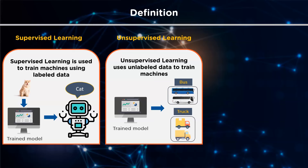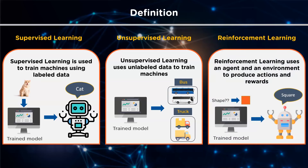Unsupervised learning uses unlabeled data to train machines. Unlabeled data means there is no fixed output variable — the model learns from the data, discovers patterns and features, and returns the output. Here is an example of an unsupervised learning technique that uses images of vehicles to classify whether it's a bus or a truck. The model learns by identifying parts such as length, width, front and rear end covers, roof hoods, and types of wheels used.